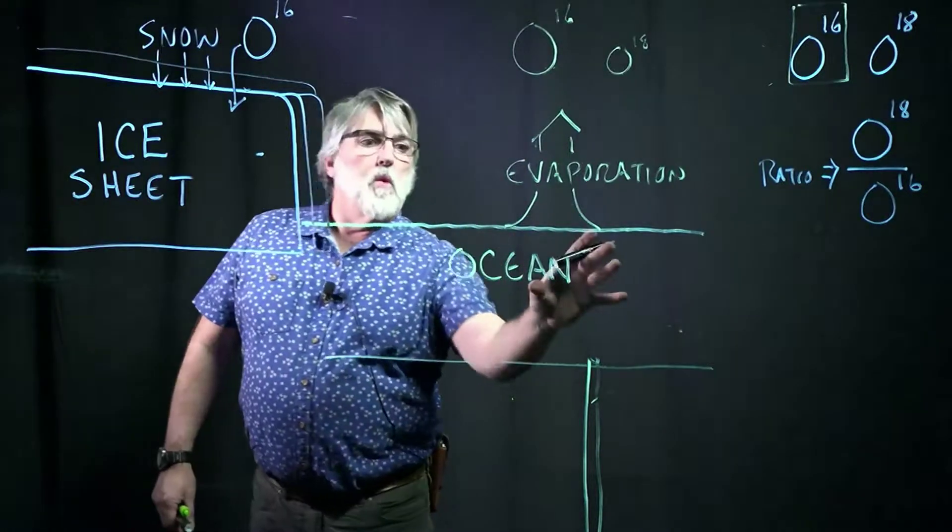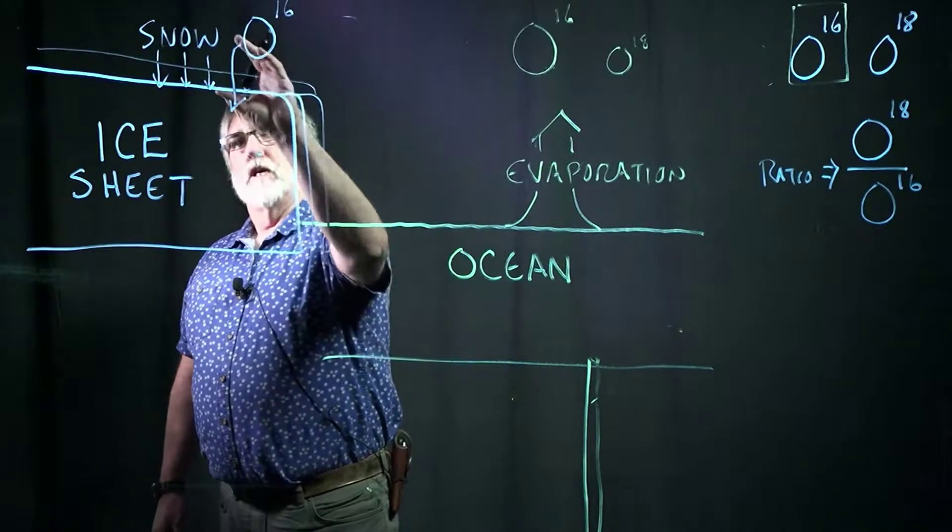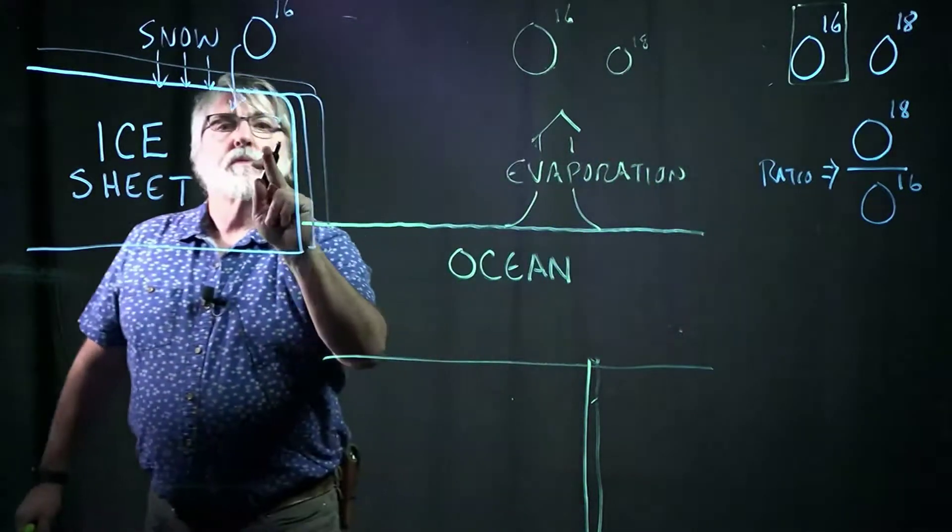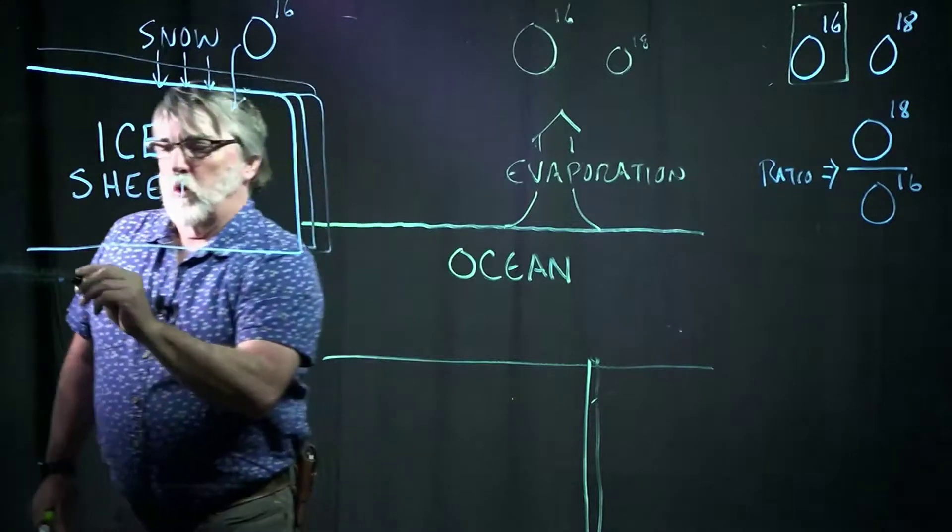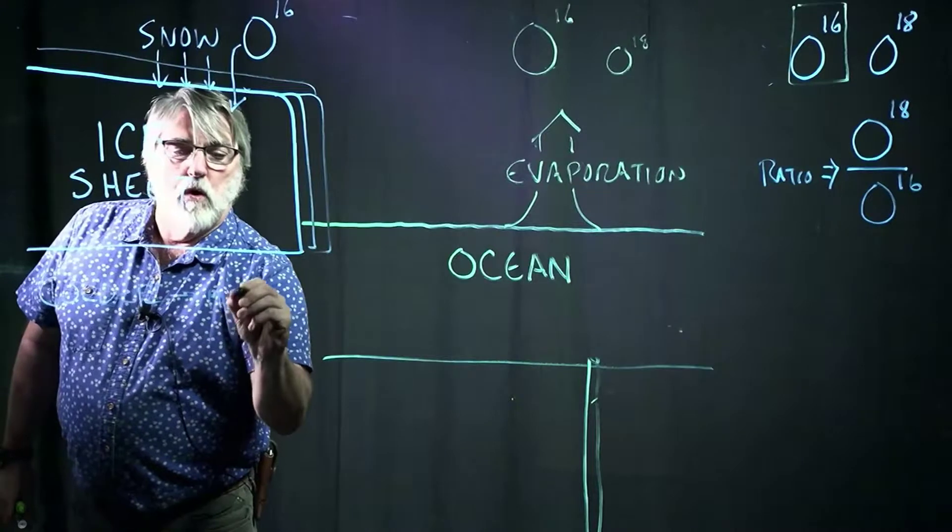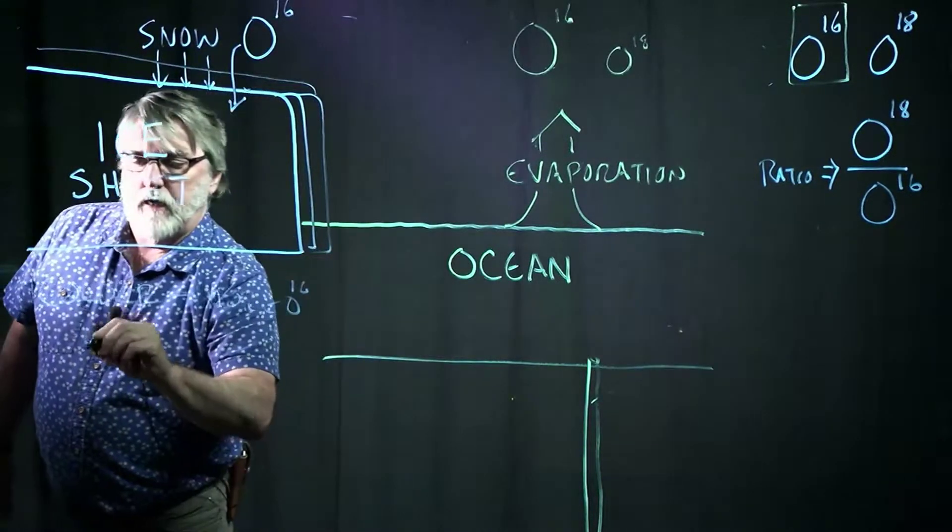So the O16 that was in the oceans is now coming out of the oceans and going into the ice. So if we think about this ratio, when it's getting colder, there is more O16 in the ice.